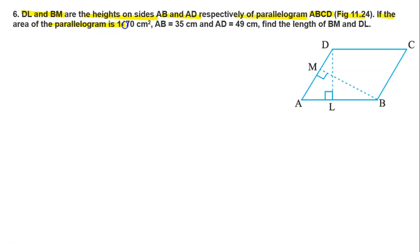If the area of the parallelogram is 1470 cm², AB equals 35 cm, AD equals 49 cm, find the length of BM and DL.